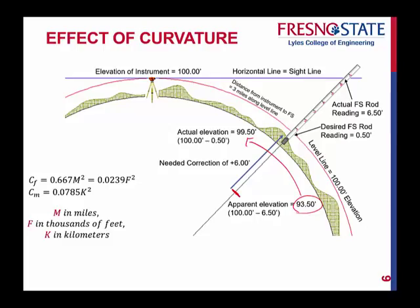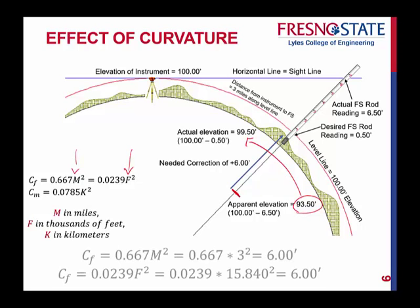The curvature correction — C_F and C_M — stands for the correction in feet or in meters. You have two equations you can use in feet: one uses miles, the other uses F, which is thousands of feet. Make sure you understand the units. If you're doing this in meters, K is in kilometers. Both equations come out with a correction of positive 6 feet.